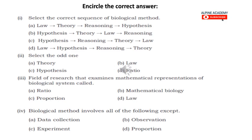Then we have to select the odd one. If we have to select the odd one, we have hypothesis, theory, law. So what is the odd one? The answer is D, that is ratio.